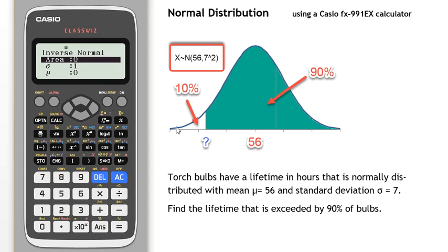And all I have to do is put in the area that I want here. Now 10%, we have to put it in decimal form so it's 0.1. So I want 0.1 at this bottom end.